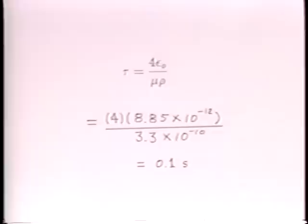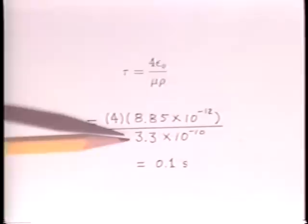At 12 kilovolts, we found an effective conductivity to be 3.3 times 10 to the minus 10 Siemens per meter. So our ions can give an appreciable charge to a smoke particle within about one-tenth of a second.